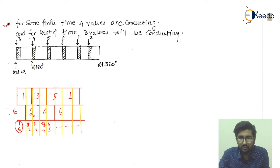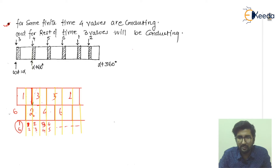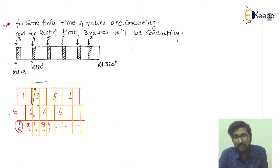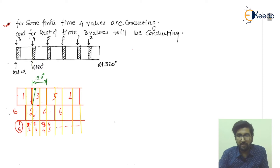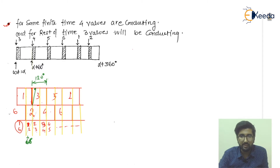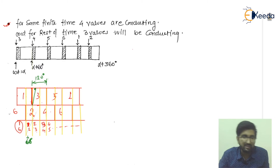Due to leakage inductance, valve one will operate for longer than the decided value of 120 degrees. Each thyristor is supposed to conduct for 120 degrees, meaning each interval is 60 degrees. With six thyristors operating across six intervals of 60 degrees each, the total is 360 degrees — that is the valid full-cycle operation.